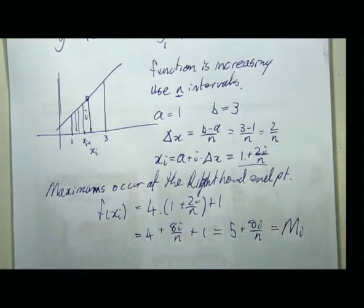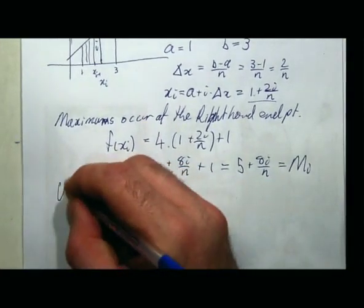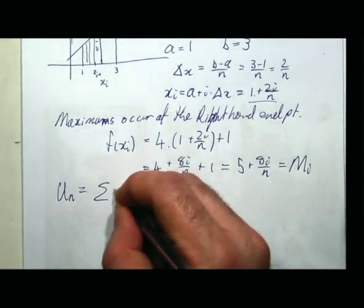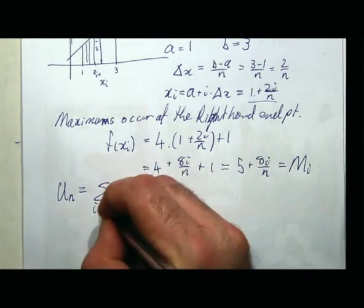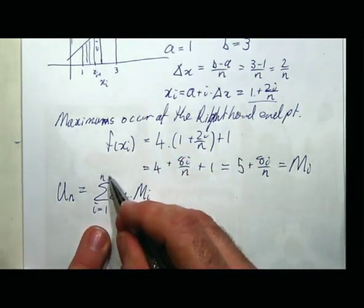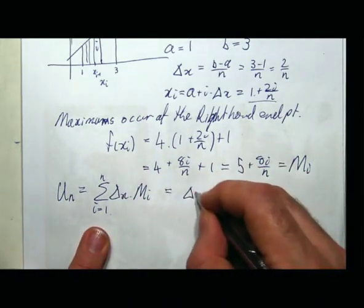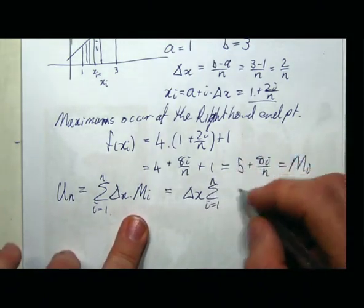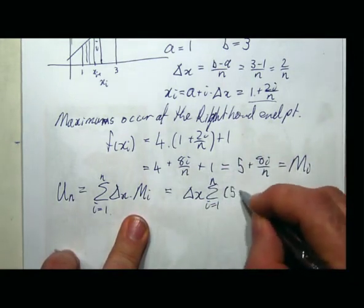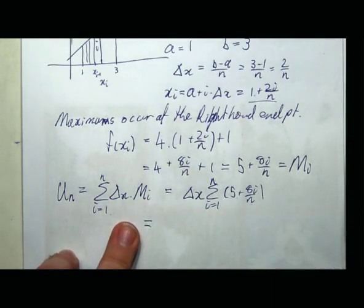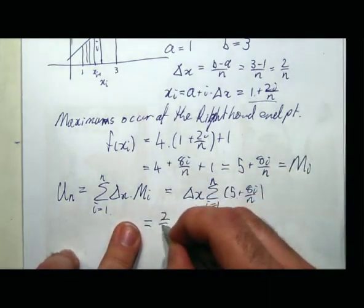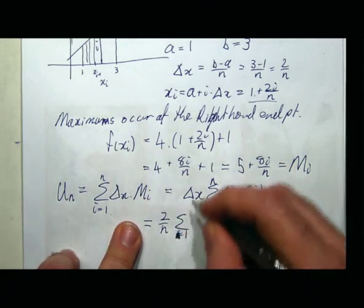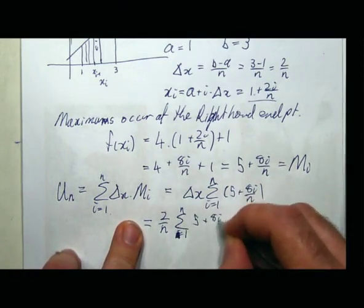When I come to do my upper sum on n intervals, it's going to be the sum from i = 1 to n of delta x times my maximums. I always put delta x outside — I can factorise it. So it's (2/n) times the sum from i=1 to n of (5 + 8i/n). This is where I start using my knowledge of summations.